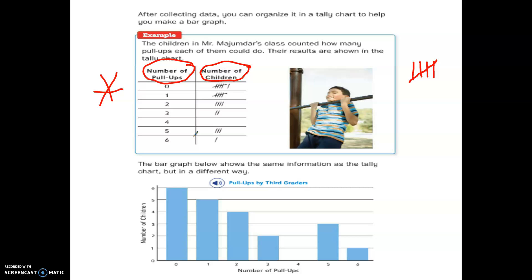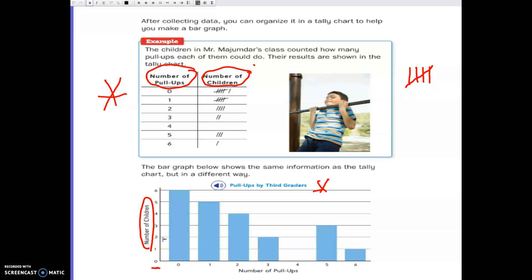So then you can take this information in the tally chart and make it be a bar graph. Here's our title. Pull-ups by 3rd graders. Here are the number of children in our scale here. Our scale goes from 0 to 6. But we're counting by 1s this time. We're not counting by 2s like the other one. So this is going 0, 1, 2, 3, 4, 5, 6. And here are the number of pull-ups that each child did: 0, 1, 2, 3, 4, 5, 6.